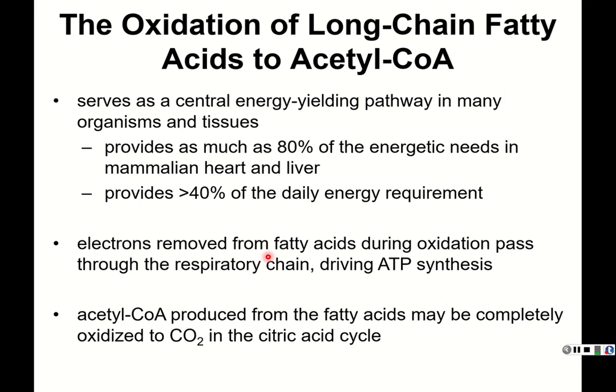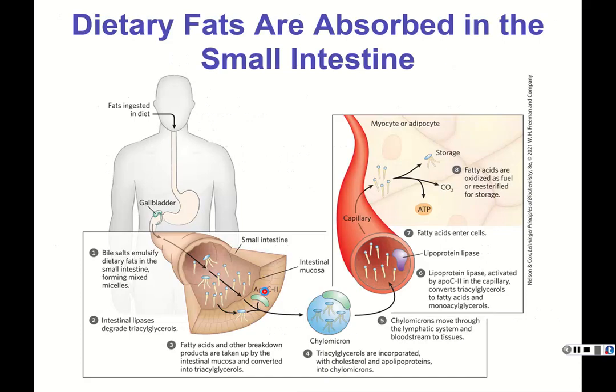Electrons removed from fatty acids during oxidation go through the respiratory chain and drive ATP synthesis. When fats are ingested into the body, the gallbladder makes bile salts that emulsify them, and they can be absorbed through the small intestine. They are then combined with apolipoproteins that help to solubilize and mobilize them, along with cholesterol, forming particles called chylomicrons.